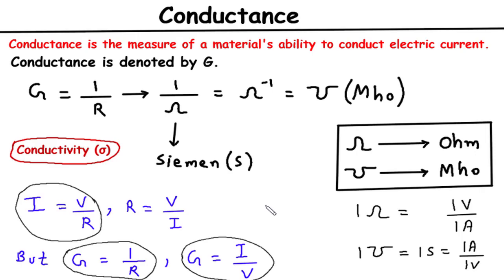Additionally, conductance is essential in designing electronic devices, such as transistors and integrated circuits, where the efficient flow of current is paramount. Conductance is a fundamental concept in electrical engineering, enabling us to understand and predict the flow of electric current.